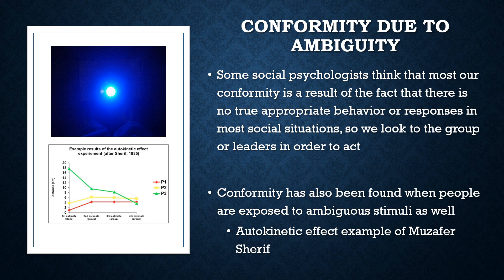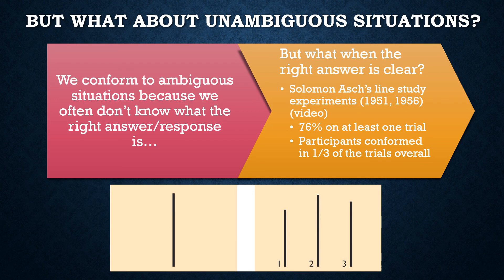Sherif's conclusions resonated widely and stuck as the prime reason people gave for why conformity was so common in almost every social situation. Then, not even a decade later, a researcher started to question these assumptions by asking a really interesting question: if we conform because we don't know what the right thing to do is, what happens when people are asked to conform when there is a really right response — and they're being asked to provide a wrong one? This was exactly what Solomon Asch asked in the 1950s in his original Asch Line Study.